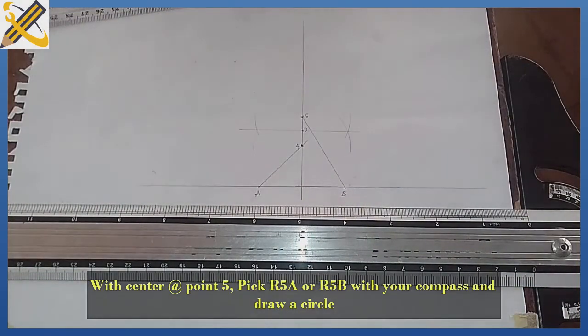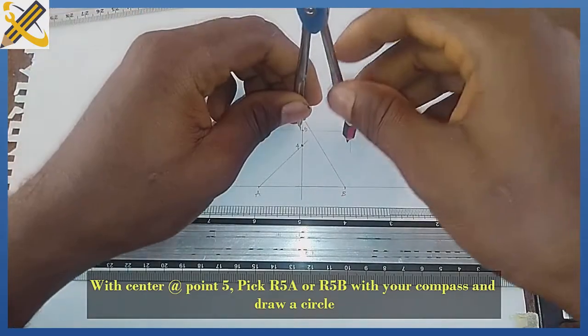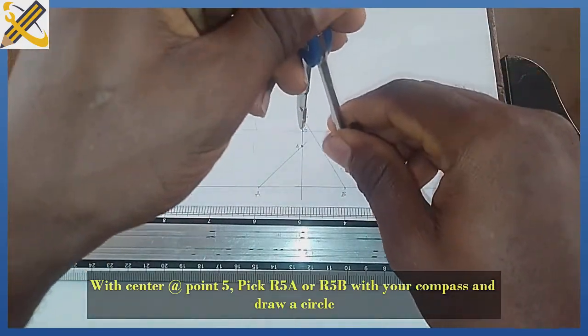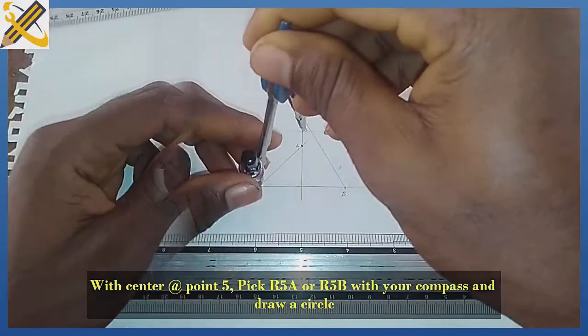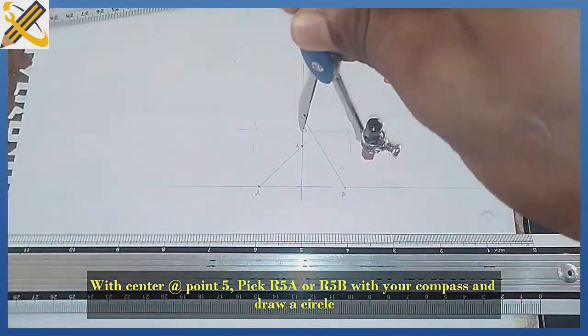The next procedure is to pick my compass and place it on point 5, from point 5 to either of point A or B. Then I'm going to draw the circle.